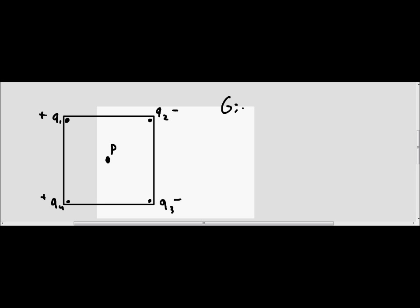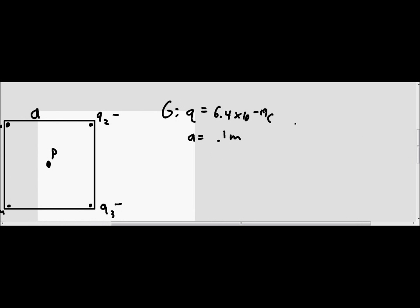And so in our givens, we are going to say that Q is equal to 6.4 times 10 to the negative 19 coulombs, because that is the magnitude of these four point charges. We're told that the side length of this, which is given the variable name A in the problem, is equal to 0.1 meters. It's given in centimeters, it's 10 centimeters, but for the purpose of using this problem, we're going to be using meters. And so we know that half of this distance, we're just going to call this B, is equal to 0.05 meters.